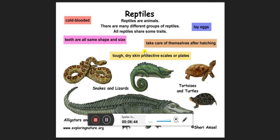The third class is Reptiles. Common characteristics: they are cold-blooded, so body temperature varies with outside temperature. Their teeth are all the same shape and size. They lay eggs, and the hatchlings take care of themselves after hatching. They have tough, dry, protective skin or plates — as seen in snakes, lizards, tortoises, turtles, alligators, and crocodiles. They have two pairs of limbs, each with five digits with claws.